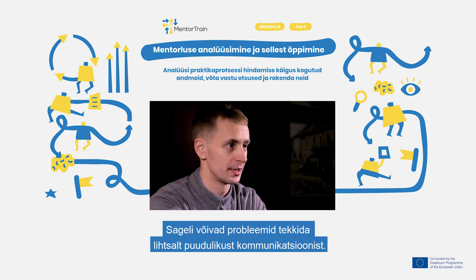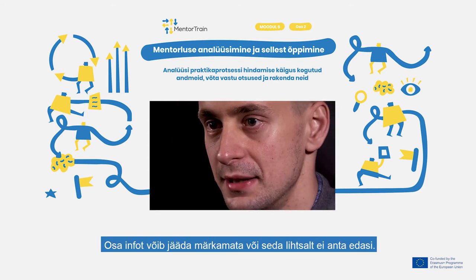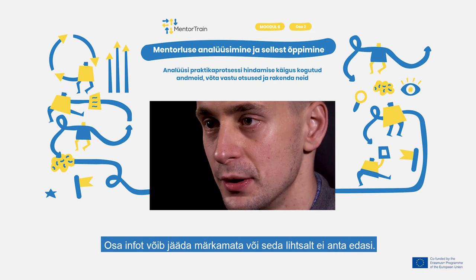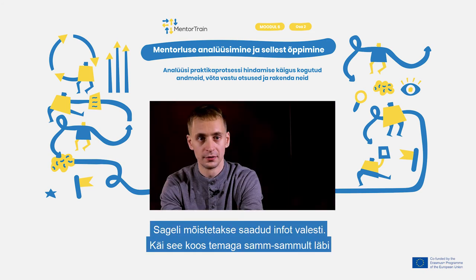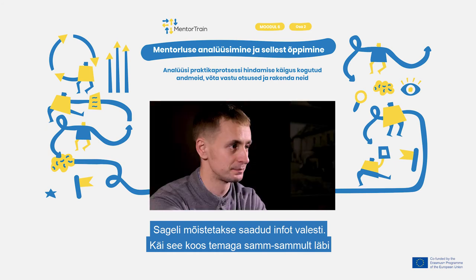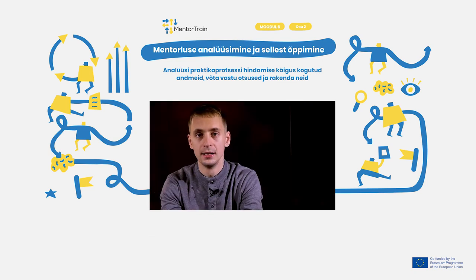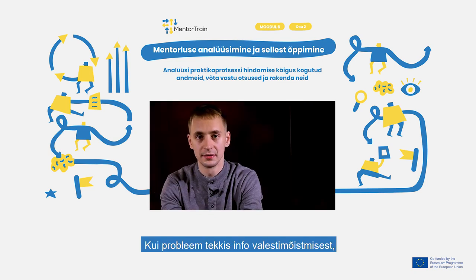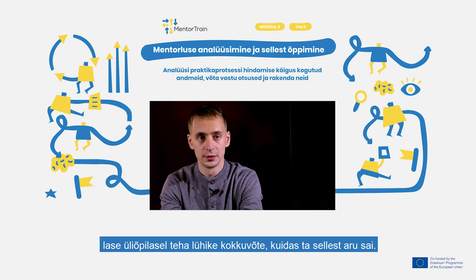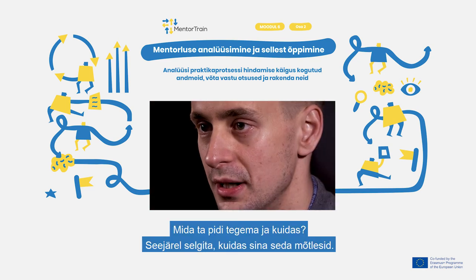Often problems can arise from simply a lack of communication. Some information can be left unnoticed or is simply not communicated, and often information can be misunderstood. Go through it step by step and see where the problem started. If the problem was about understanding the information, let the student make a short summary of how they understood it, what they had to do and how. Then explain how you meant it.